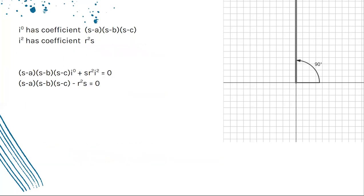Well, now we know the real part is zero, so we can set this equal to zero. And then since i² is -1, we have (S - A)(S - B)(S - C) - R²S = 0.